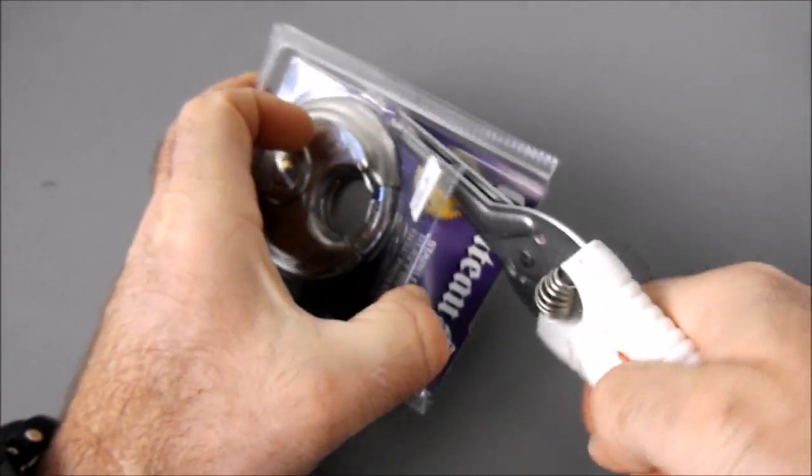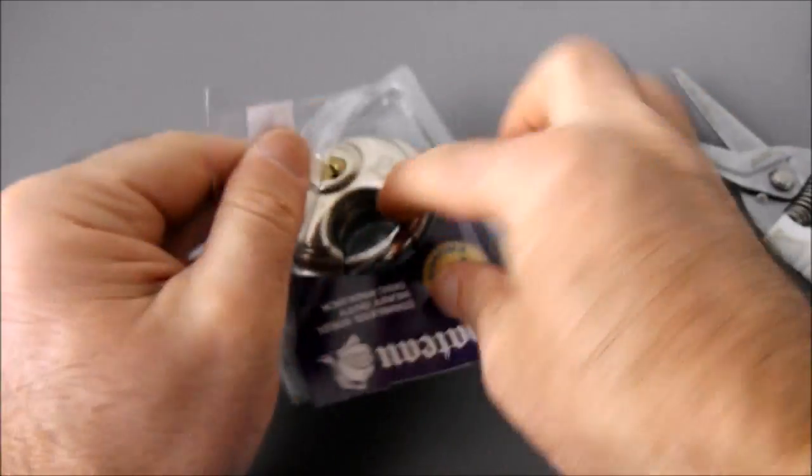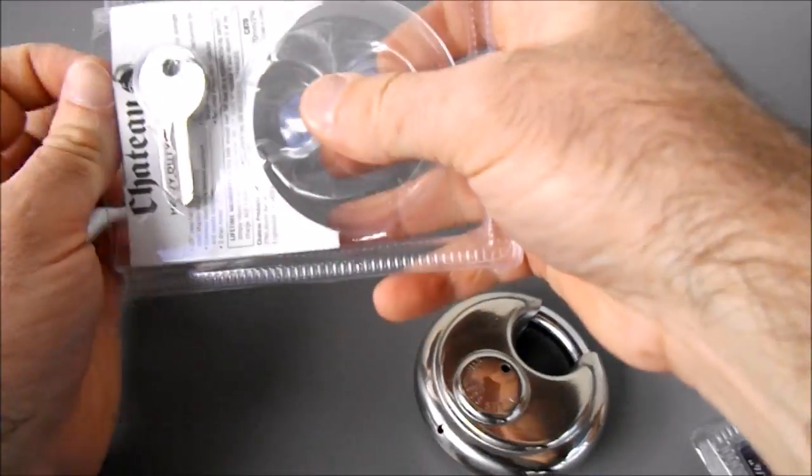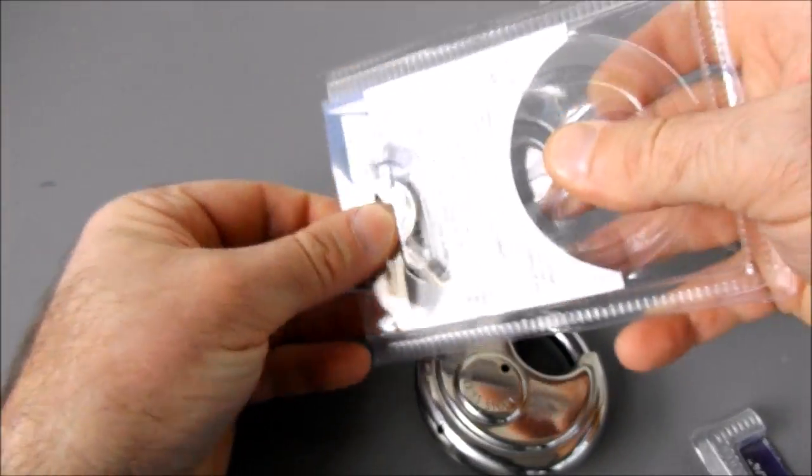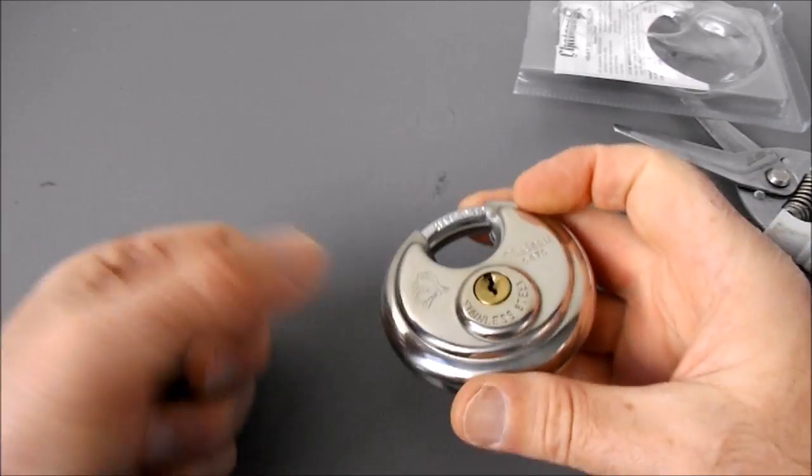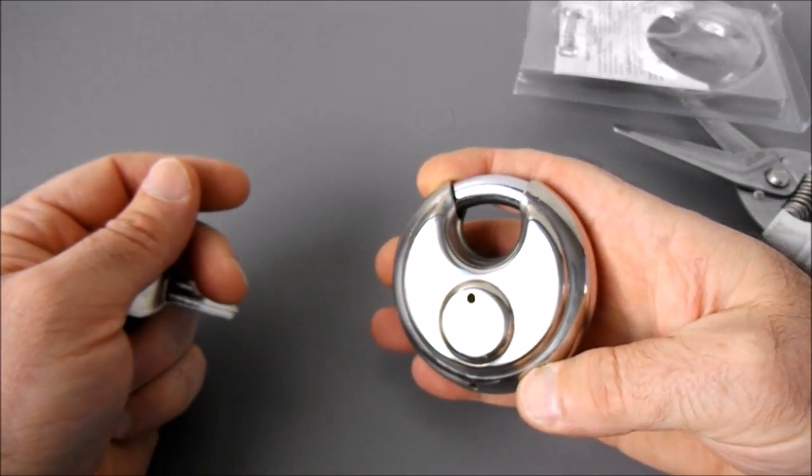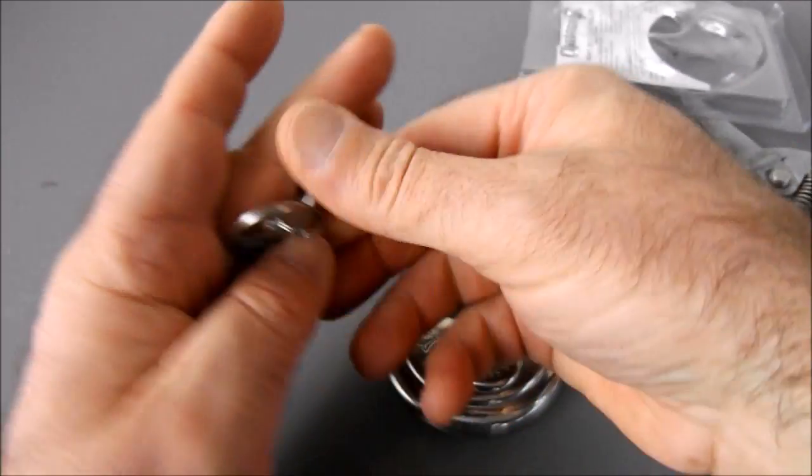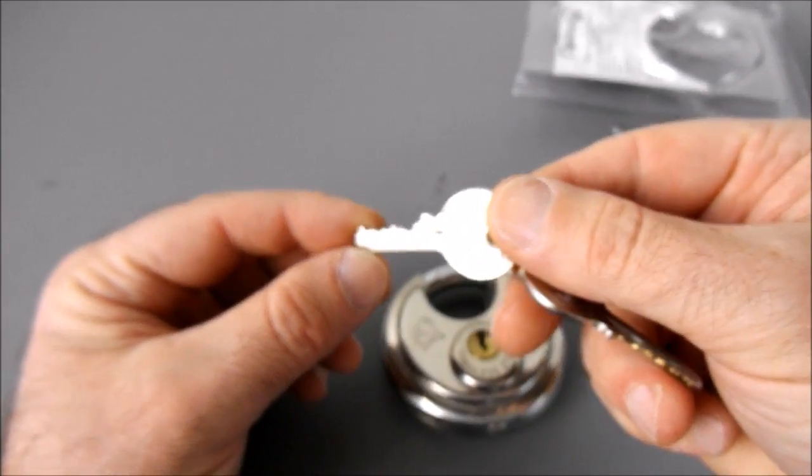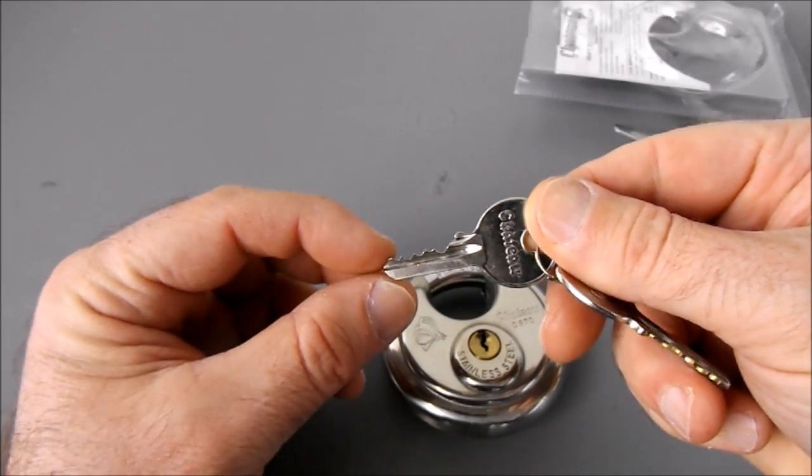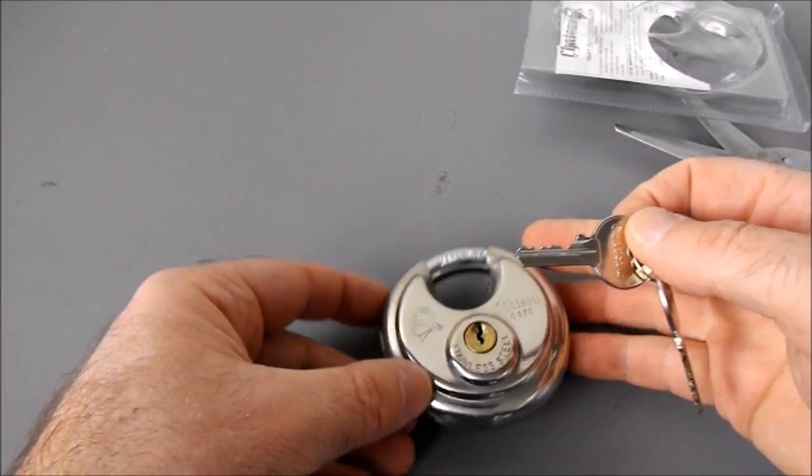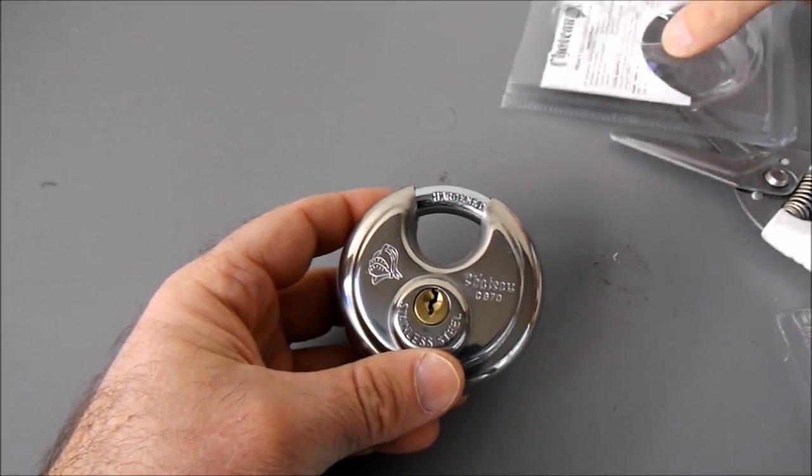Okay, here's our lock - pretty standard disc lock, you've seen it before. Here is our key. I'm counting one, two, three, four, five notches there, so I'm thinking five pins. It kind of makes sense.